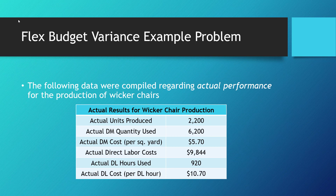What actually happened? At the end of this period, we determined that the company produced 2,200 wicker chairs. To do so, they used 6,200 yards of wicker — our actual direct material quantity used — and paid an average of $5.70 for each square yard. They incurred a total of $9,844 of actual direct labor cost because their workers worked 920 hours and earned an average of $10.70 per hour.